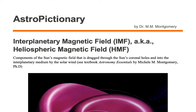The Interplanetary Magnetic Field, or IMF, is also known as the Heliospheric Magnetic Field, or HMF. It is the component of the Sun's magnetic field that is dragged through the Sun's coronal holes and into the interplanetary medium by the solar wind.